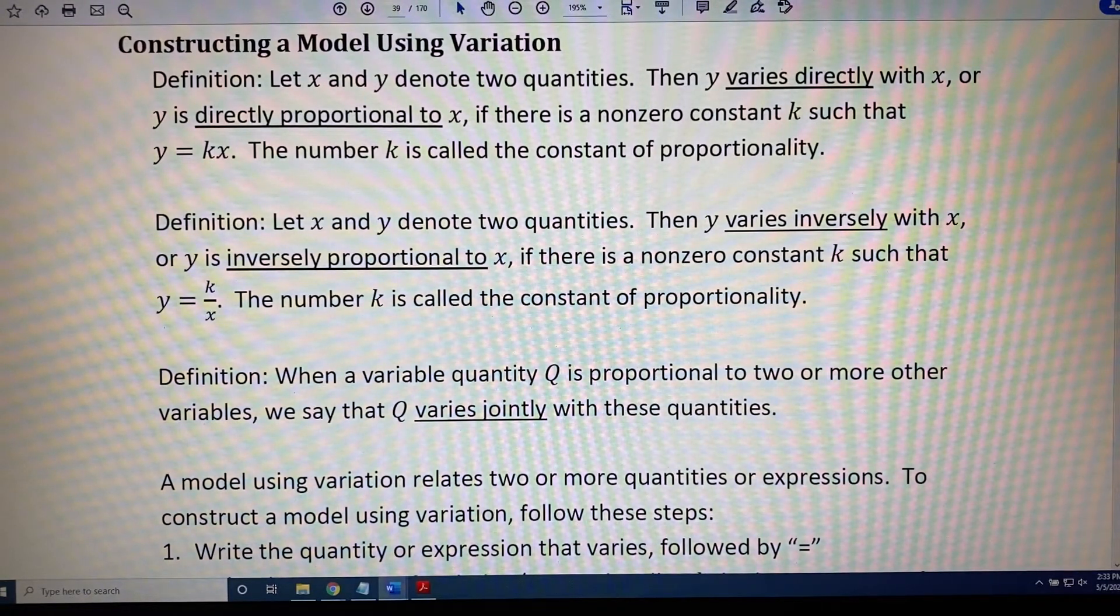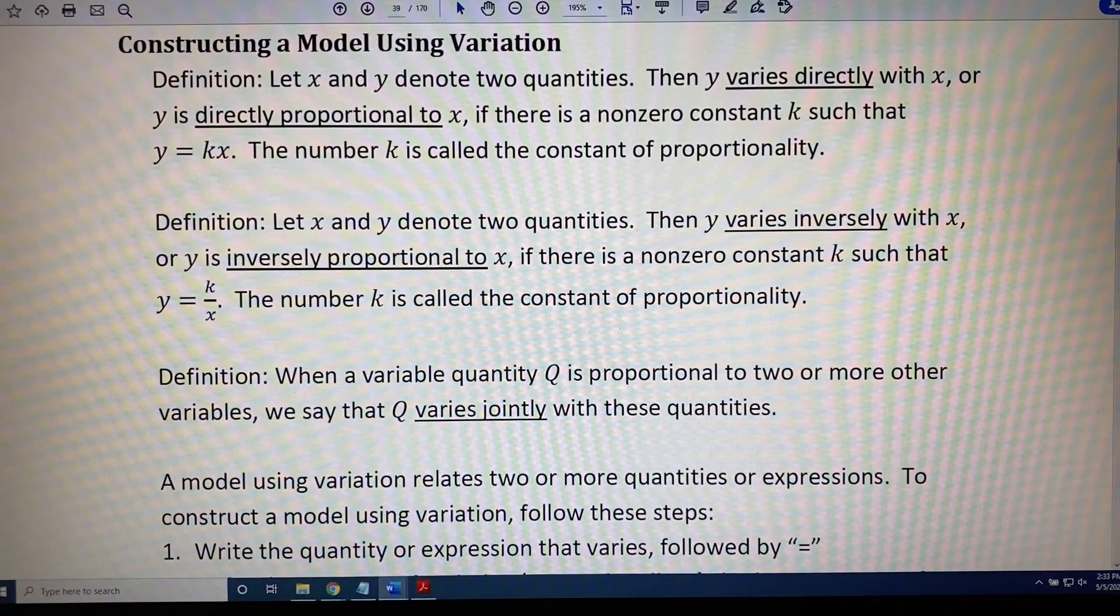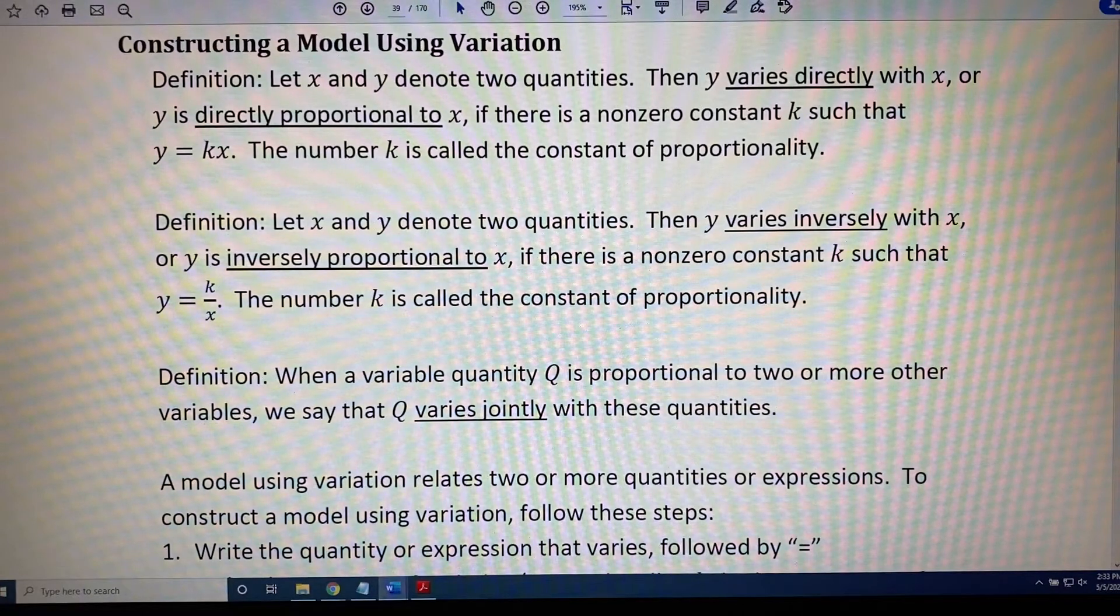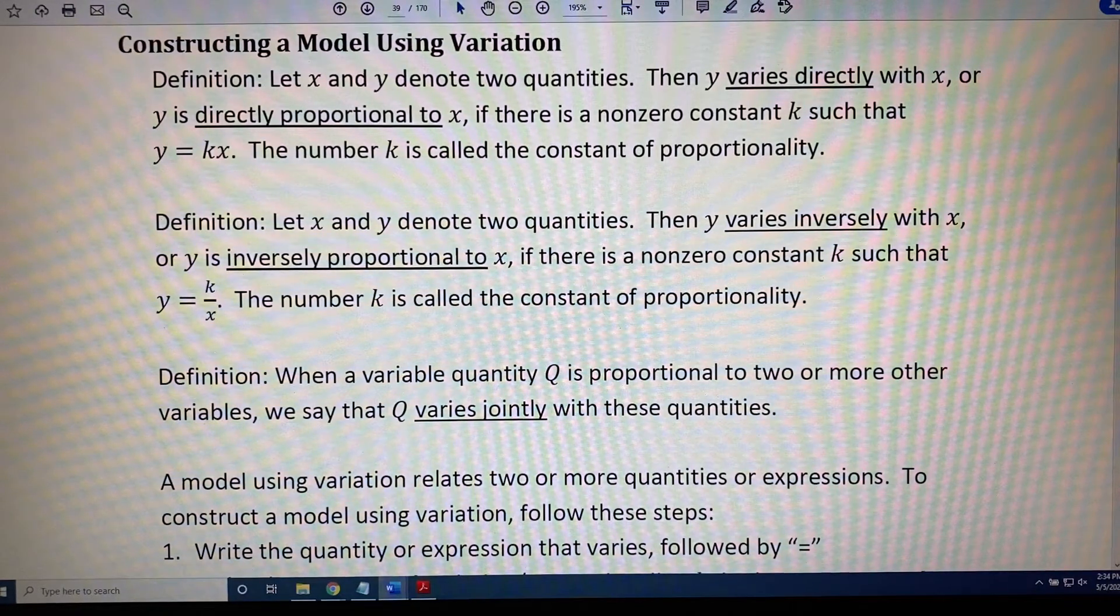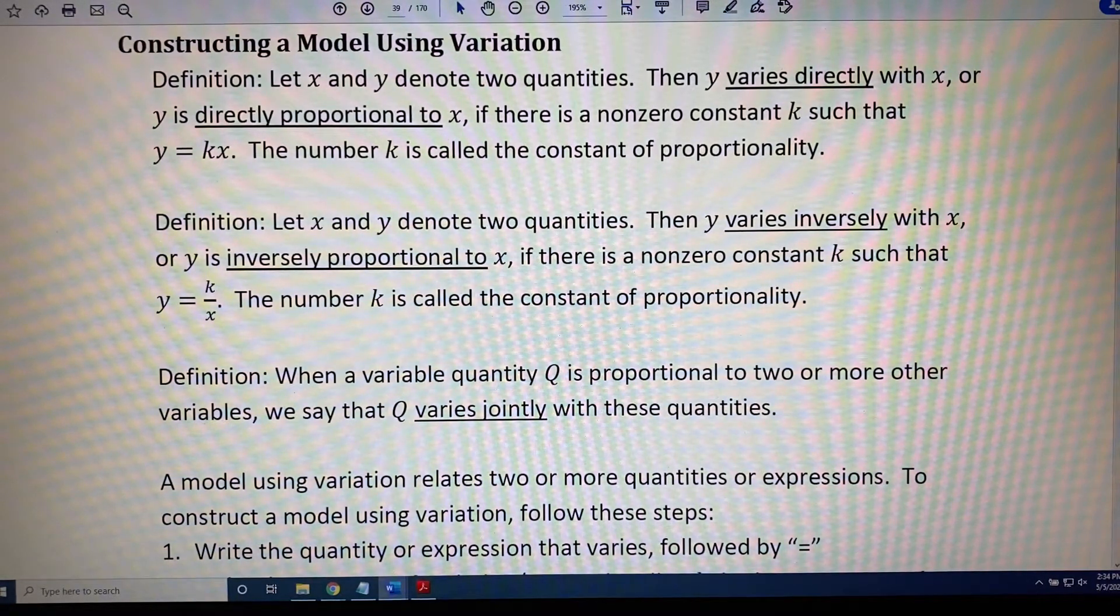In fact, we can write a variation equation involving that situation. For example, if y is the amount of money spent, if k is the price per bag of chips, and if x is the number of bags of chips, then y equals kx. Money spent equals price per bag times number of bags. We can say that y is directly proportional to x. The amount of money that you spend is directly proportional to the number of bags of chips you purchase.